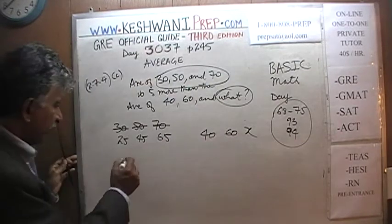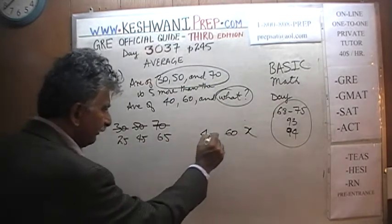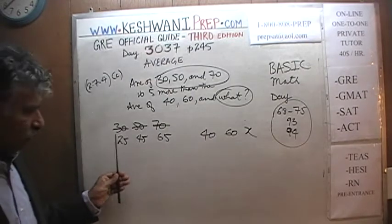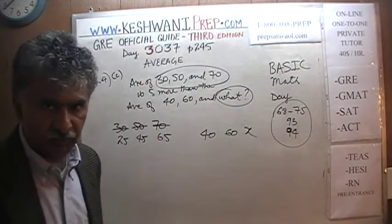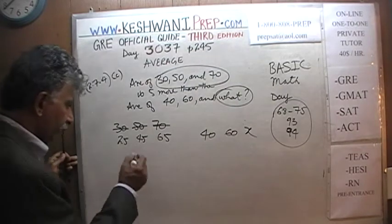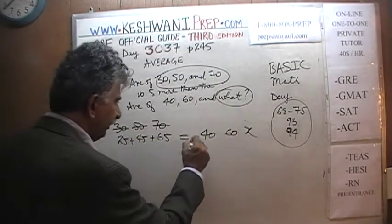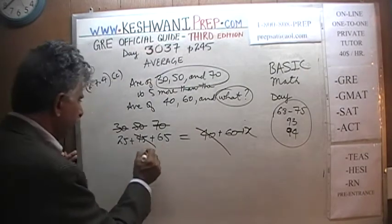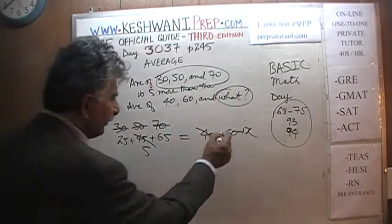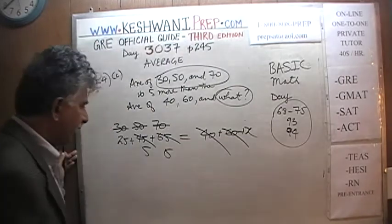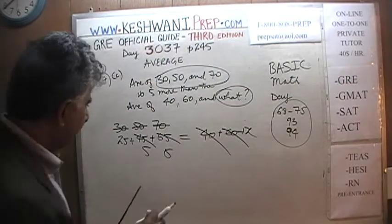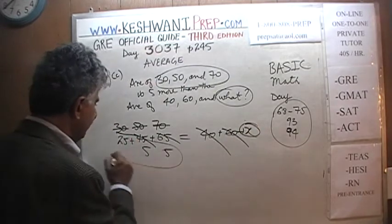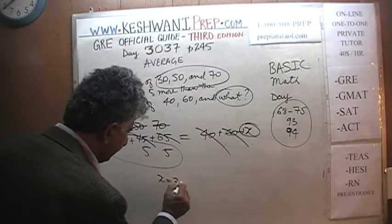Since the sums must be equal — 25 + 45 + 65 = 40 + 60 + x — let's subtract 40 from both sides: 45 becomes 5. Let's subtract 60 from both sides: 65 becomes 5. And there we go — x equals 35.